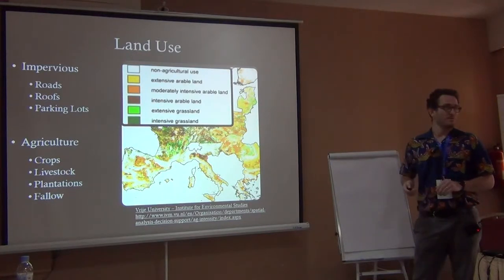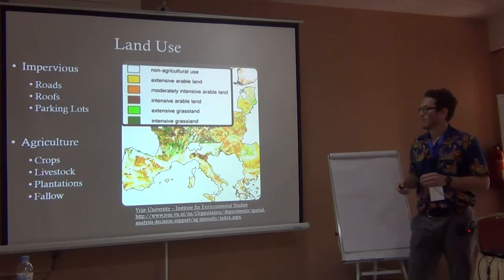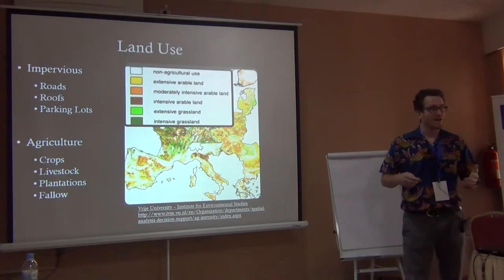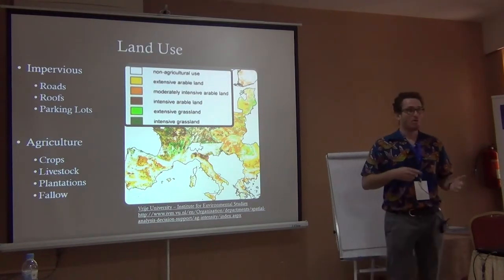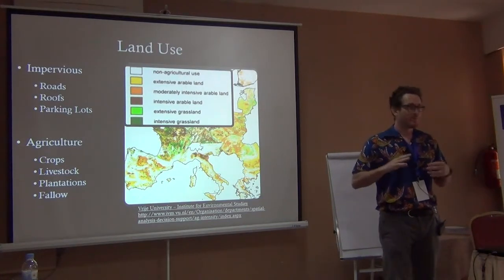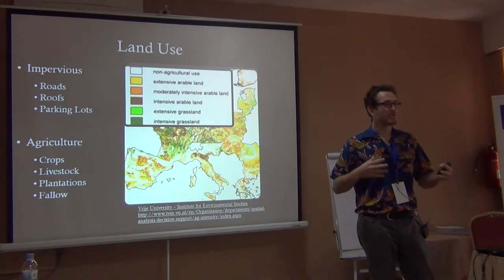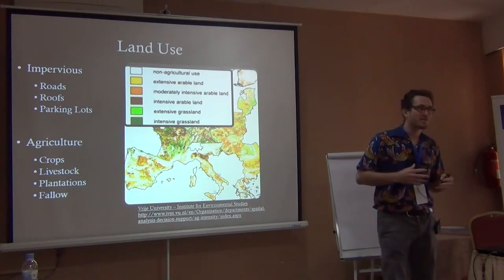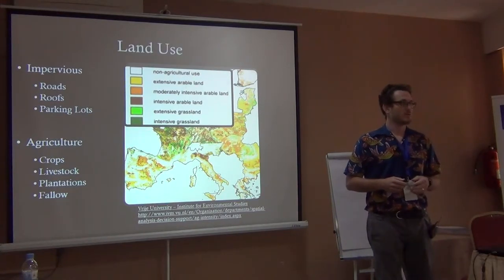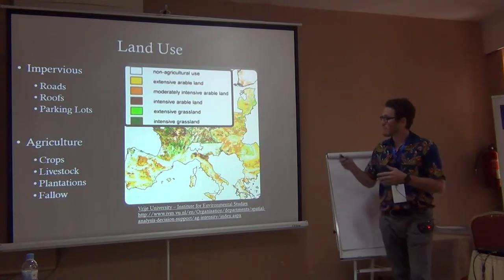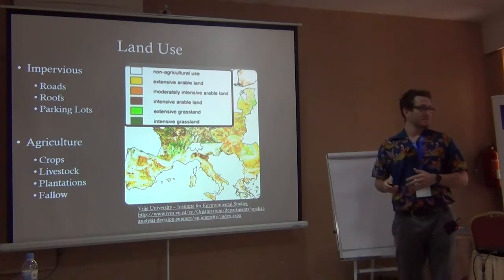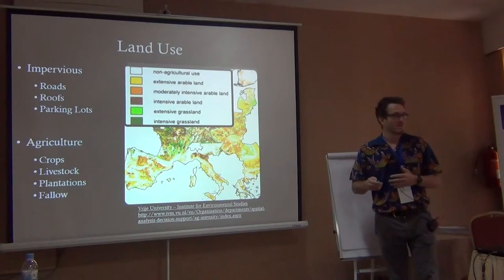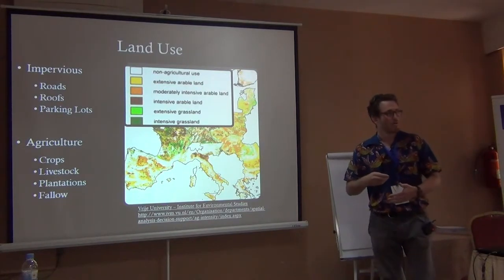Here's another different type of land use: agriculture. We have different types of agriculture — crops: plants that we grow; livestock: animals that we raise; plantations: trees that we grow. We can also have fallow land, which means it's agricultural land currently being regenerated — we're not using it for grazing right now, but we'll probably use it again in the future. So we have all these different levels: moderately intense, intense, extensive grasslands.